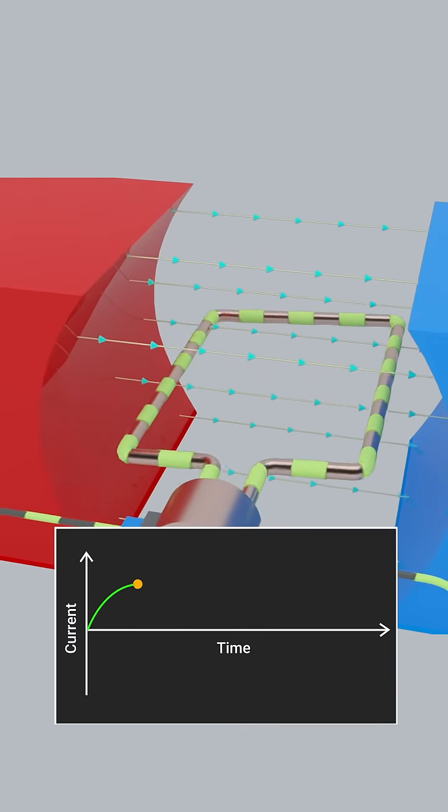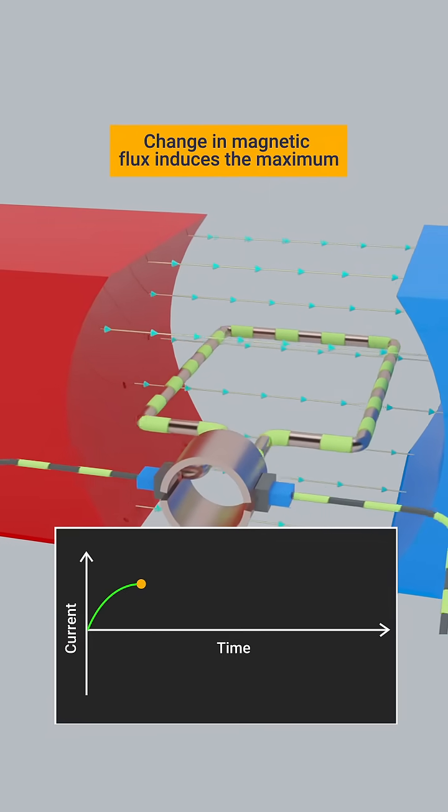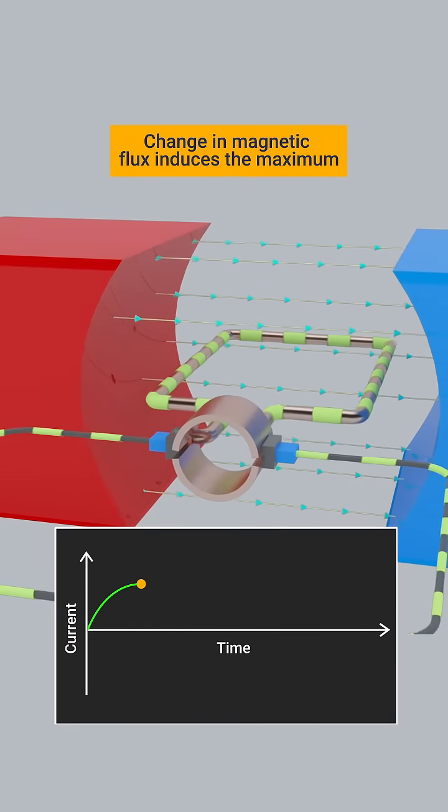When the armature coil reaches a 90-degree angle, the change in magnetic flux induces the maximum EMF, resulting in a peak current flow.